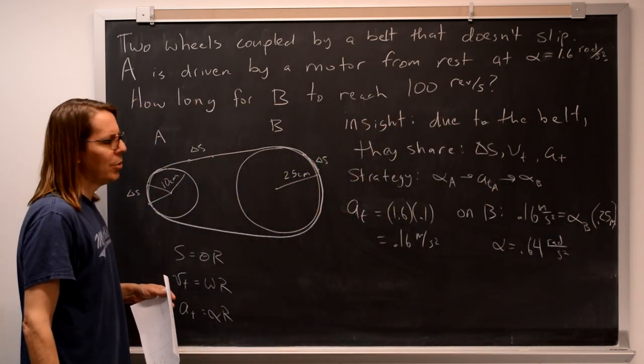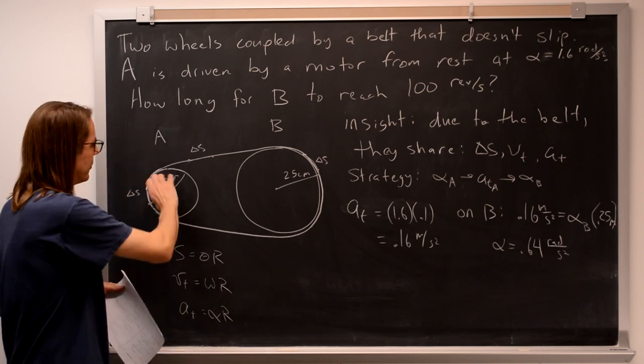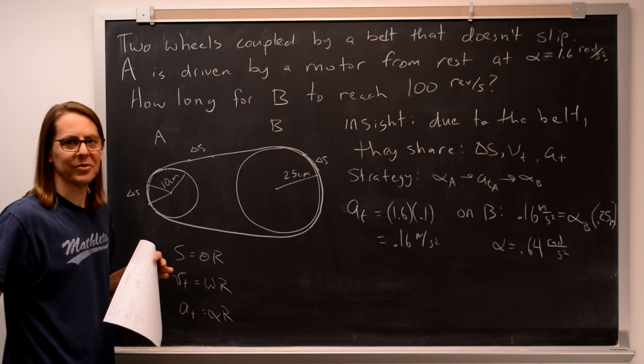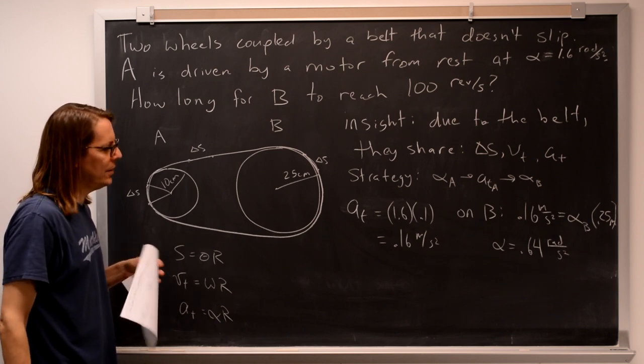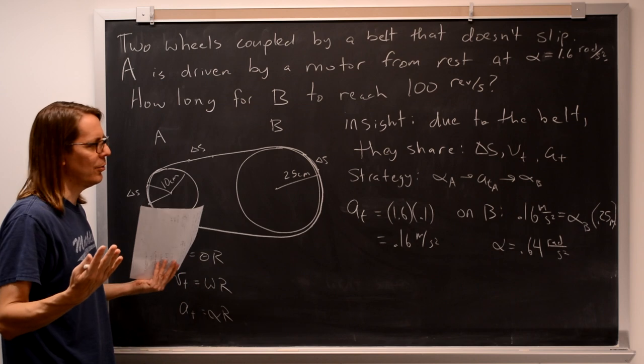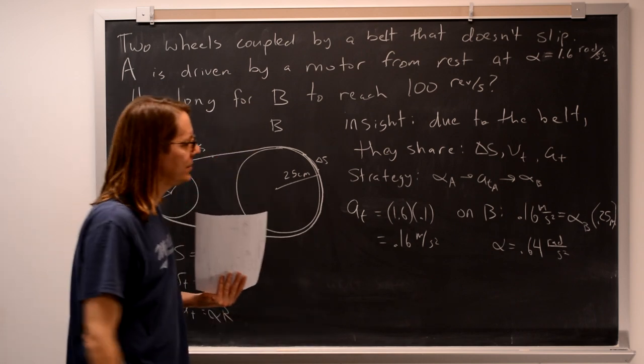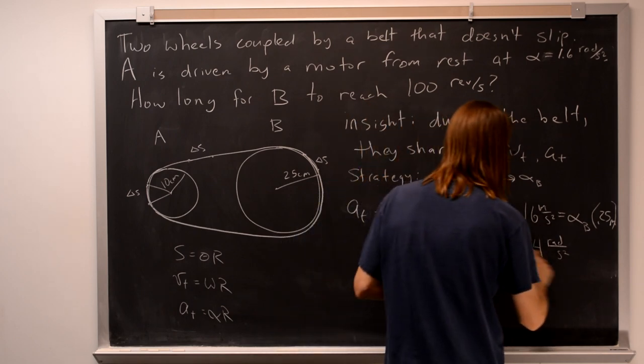All right, so that is smaller. And that makes sense. This is a smaller wheel. If the edges are going the same speed, this one isn't going to be rotating as fast. So 0.64 radians per second squared, and now I forgot what we were doing.